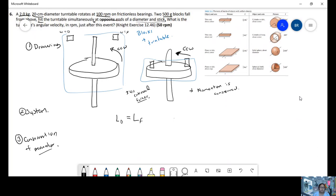So we have our conservation of momentum. At the beginning, we have only one object rotating. So we're going to have inertia of the turntable times the angular velocity initial.